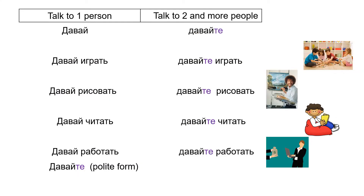Here I want to explain the difference between давай and давайте. When we talk to one person, we say just давай. And if we talk to two or more people, we add the particle -те: давайте. For example: давай играть — давайте играть. Давай рисовать — давайте рисовать. Давай читать — давайте читать. Давай работать — давайте работать.